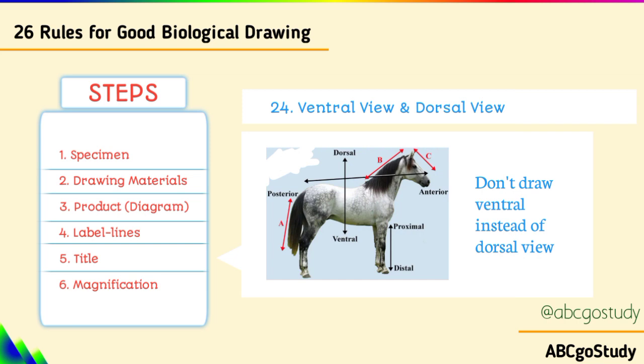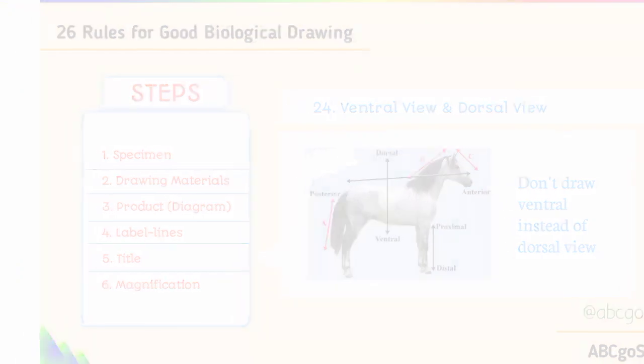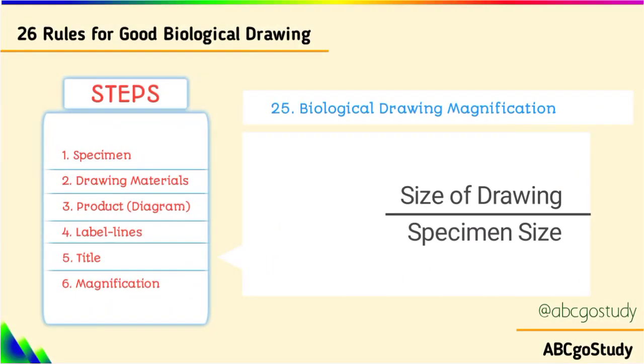Number twenty-three: do not draw the longitudinal section when transverse section is required, and vice versa. Number twenty-four, ventral versus dorsal view: when required to draw a ventral view, don't draw a dorsal view — they will not give you marks for that because you have not done what they require.